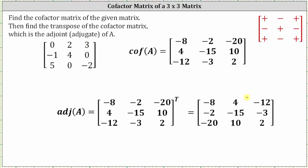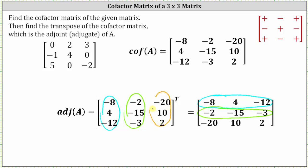Now that we have the cofactor matrix, we can determine the adjoint of A by finding the transpose of the cofactor matrix. To transpose the cofactor matrix, we make column one of the cofactor matrix row one of the transpose, column two of the cofactor matrix row two of the transpose, and column three of the cofactor matrix row three of the transpose. This transpose is the adjoint of matrix A, or the adjugate of A. I hope you found this helpful.